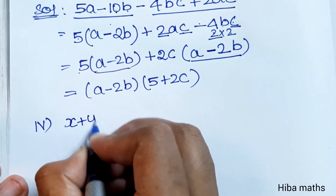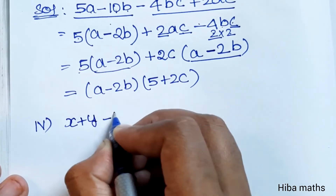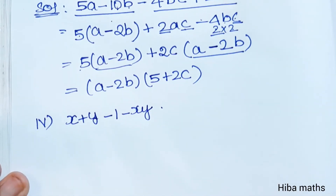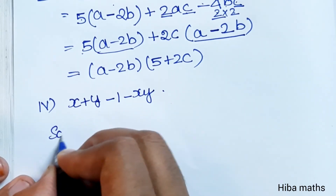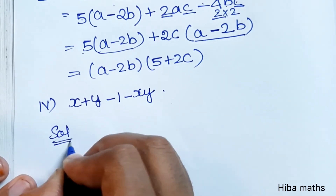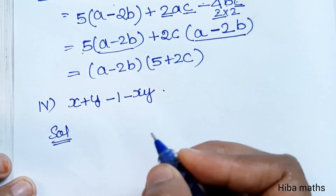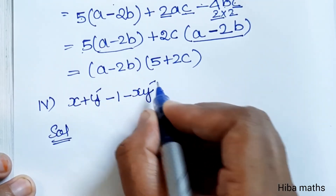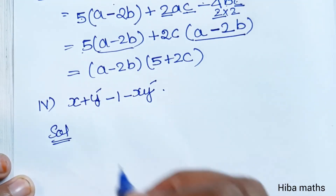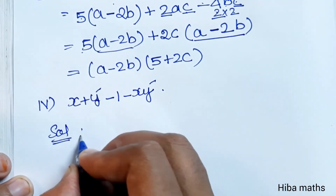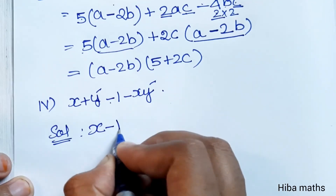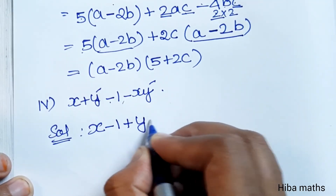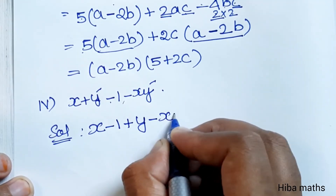The next sum is x plus y minus 1 minus xy. We need to find the factored form. We change the grouping of the question. The first group is x minus 1, and the second group is y minus xy.